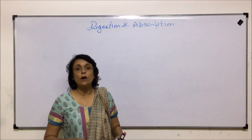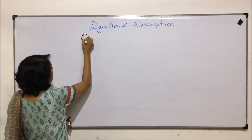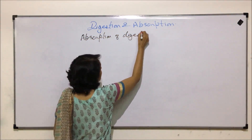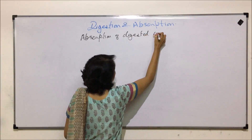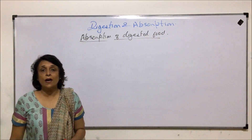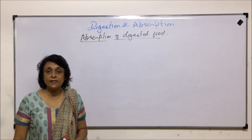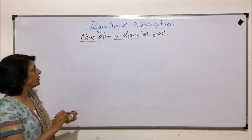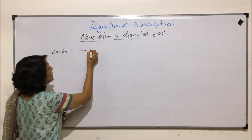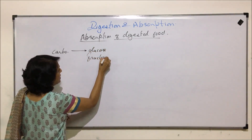In this section, we will talk about the next process, that is absorption of digested food. We have seen that carbohydrates are broken down into simplest sugars, that is monosaccharides. Carbohydrates have been broken down into simple sugars like glucose, fructose, and galactose.